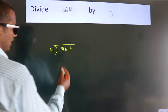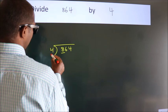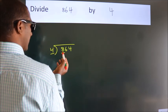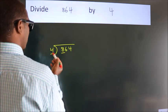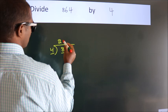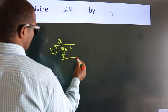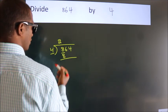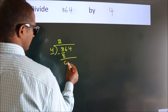Next. Here we have 8, here 4. When do we get 8? In 4 table, 4 twos, 8. Now, we should subtract. We get 0.